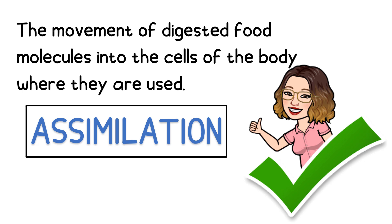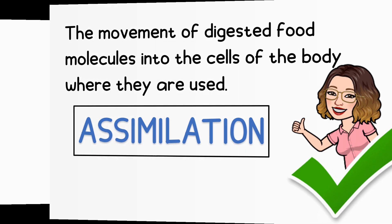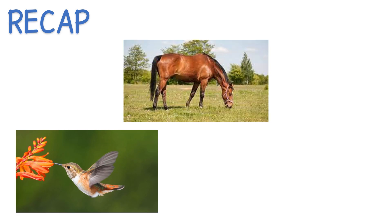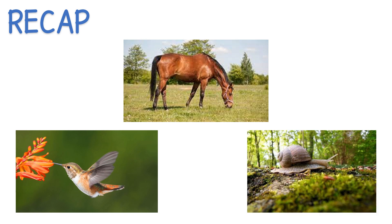The movement of digested food molecules into the cells of the body where they are used. Take a look at the following pictures. Can you guess what part of the body they used for feeding? Some animals have mouth and teeth, others have a beak. For snails, they have their radula. Their food varies depending on the kind of animal, whether they are herbivores, carnivores, or omnivores.